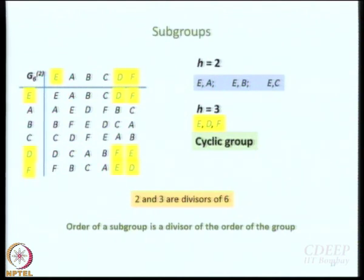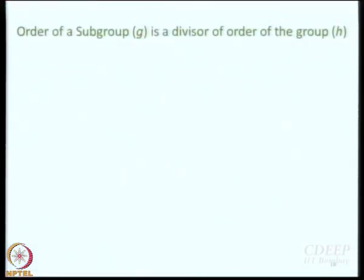Can you have a subgroup of order 1? That will exist for everything — that is just E, the one element. So this is something we are going to prove: the order of a subgroup g is a divisor of the order of the group H. Let us consider that there are g elements of the subgroup: A1, A2, A3, A4, A5, up to Ag.